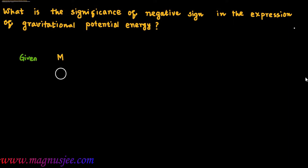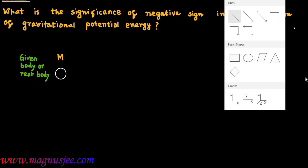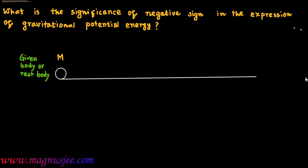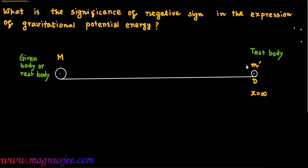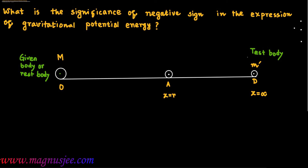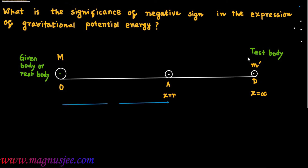In the diagram, capital M is the mass of the given body at point O. We consider a test body of mass M' at point D, that means at a distance infinity from the given body. The test body is brought from point D (infinity) to point A, and the distance of point A from the given body is R, so x equals R at point A.